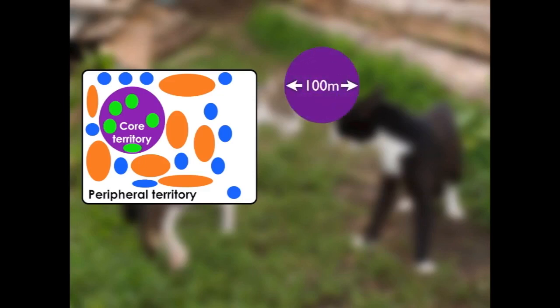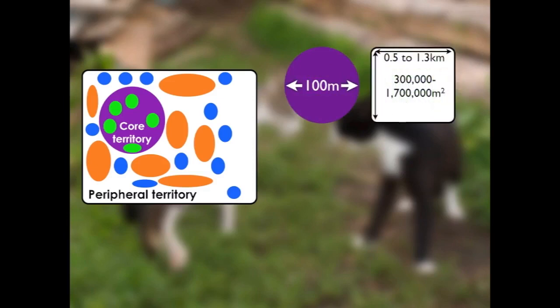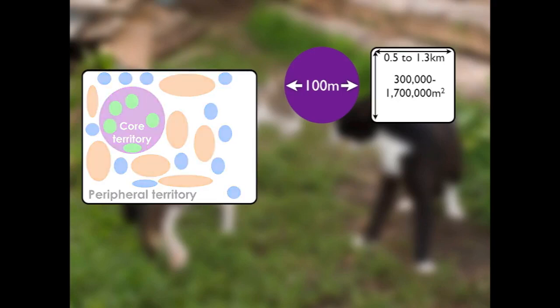To give a rough idea of territory sizes in wild and feral cats: the core territory is typically around 100 metres in diameter, and the peripheral territory is around half to 1.3 kilometres along the side if it's an oblong shape, equating to around 300,000 to 1.7 million square metres — a very large area. Although cats can't move items within their territory, they do organise how they utilise it to optimise certain characteristics.